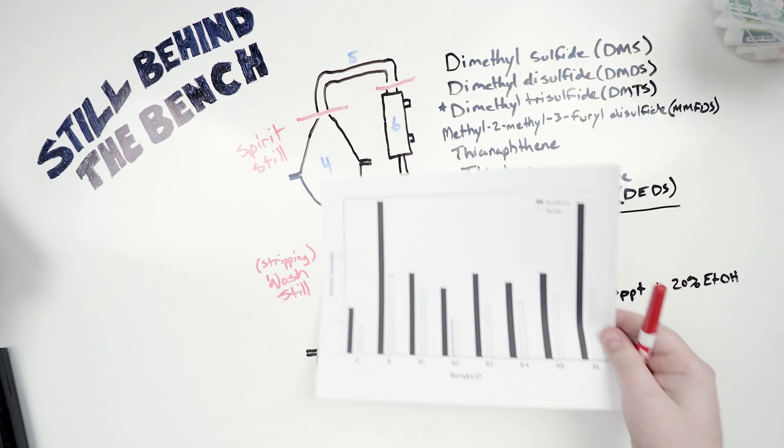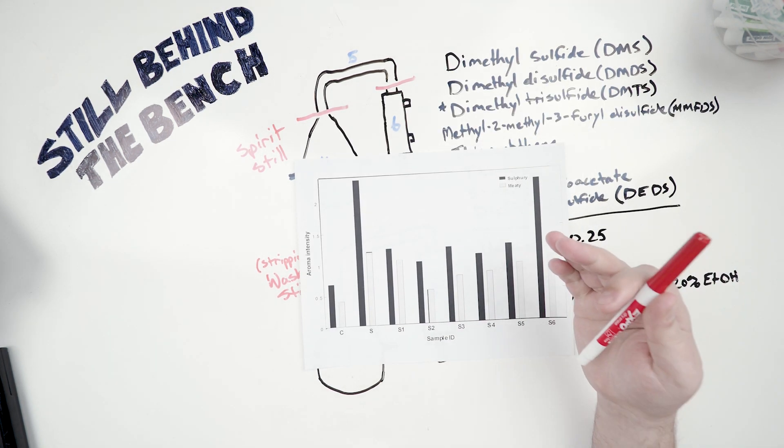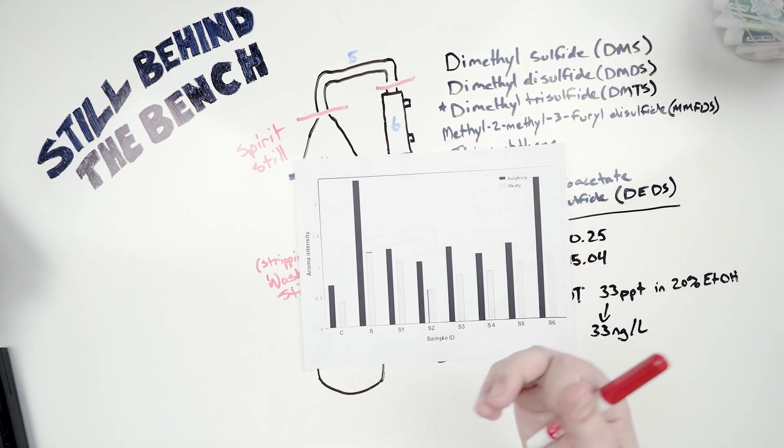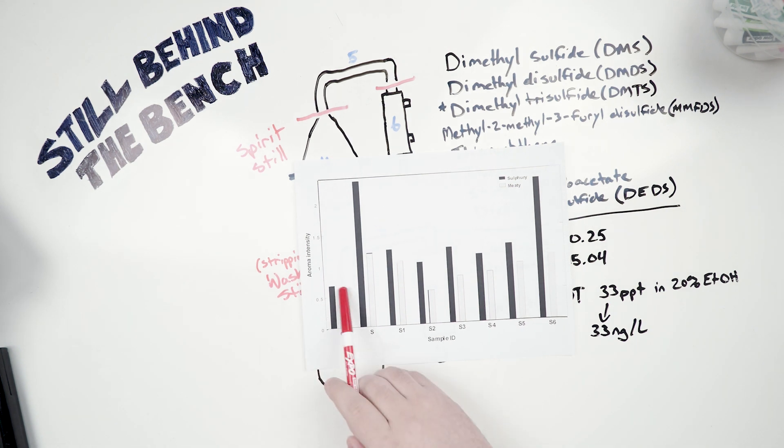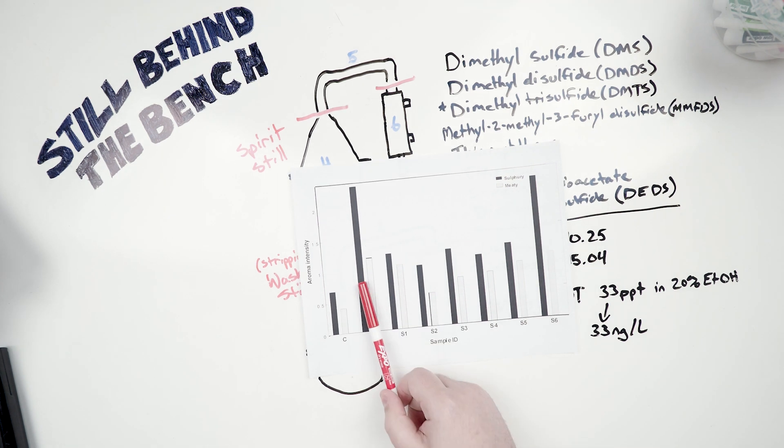So they take their distillate, and they give it to the Scotch Research Institute's sensory panel, and these are the values that they got back. So with the copper still, you can see the sulfur-y and meaty values are really low. So this is all copper. This is all stainless steel. You can see the values are very high.